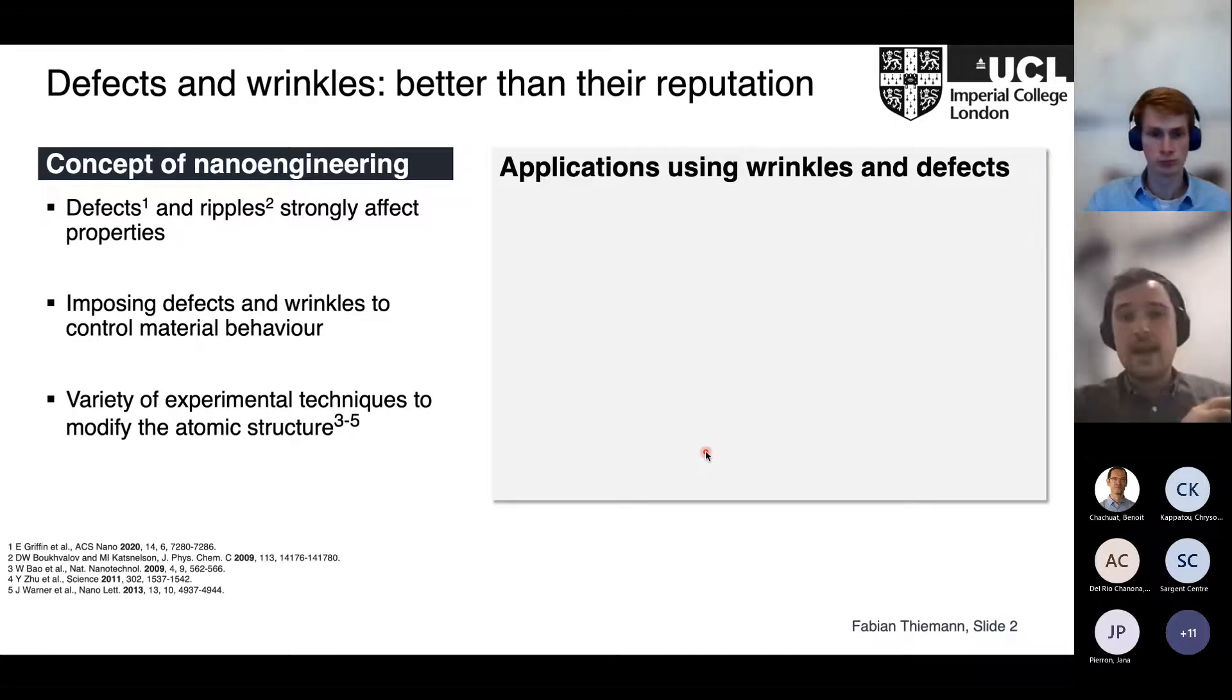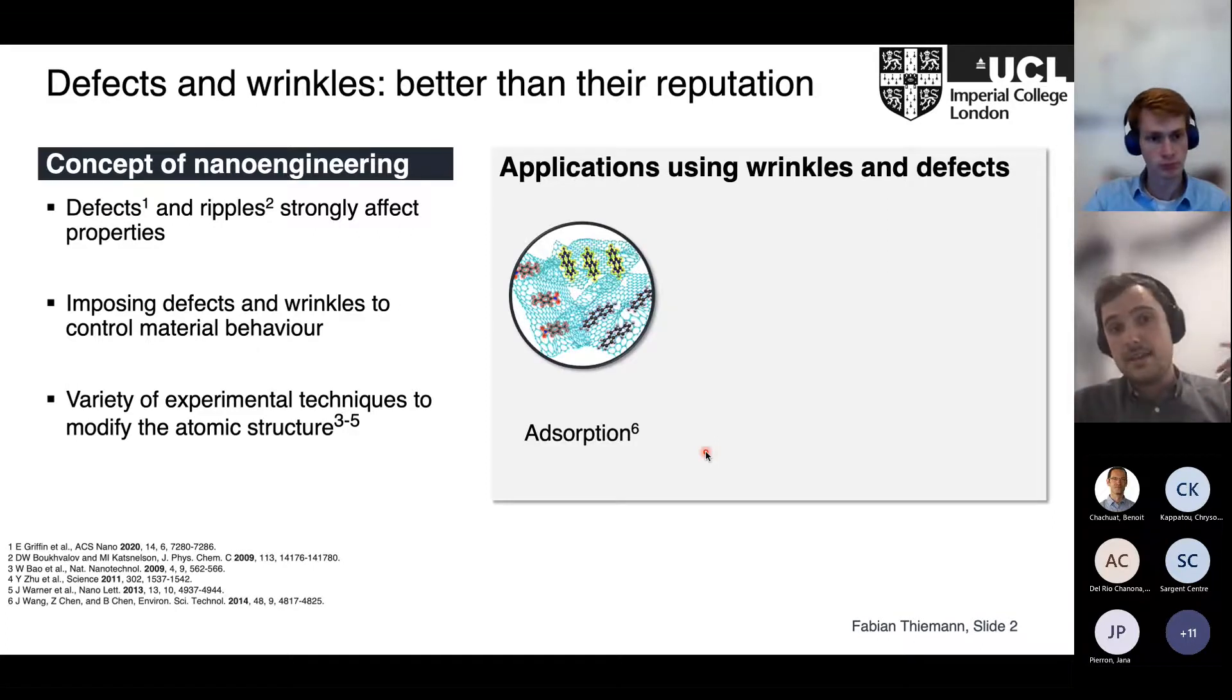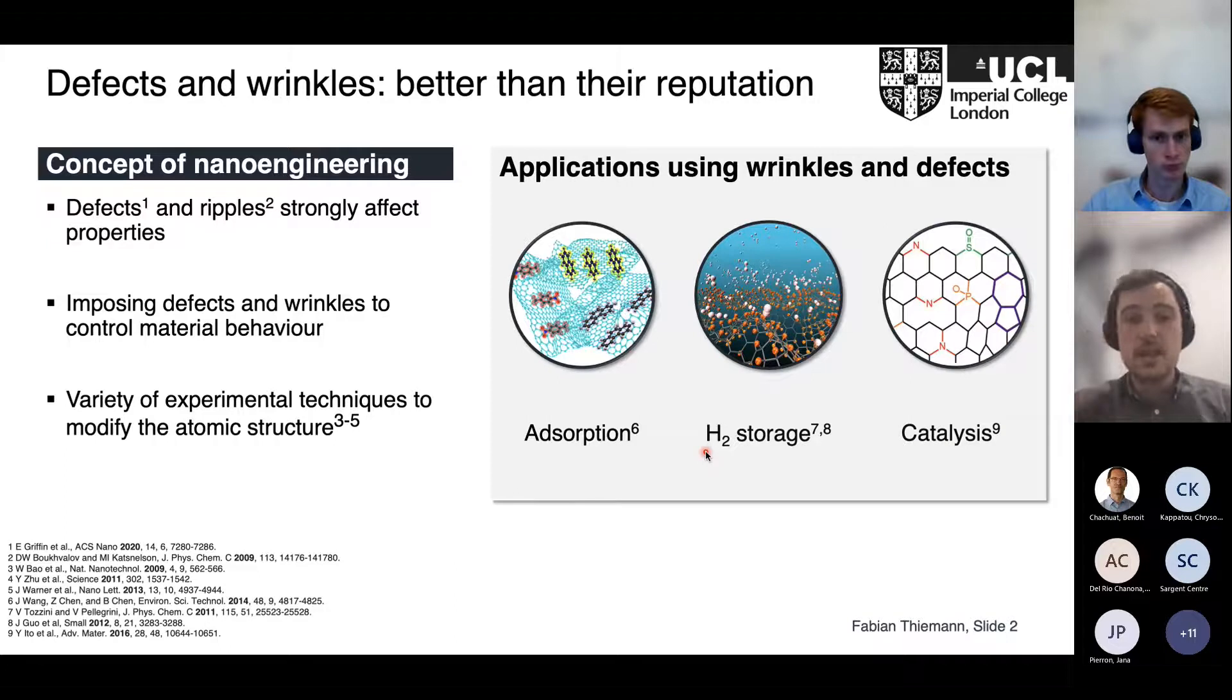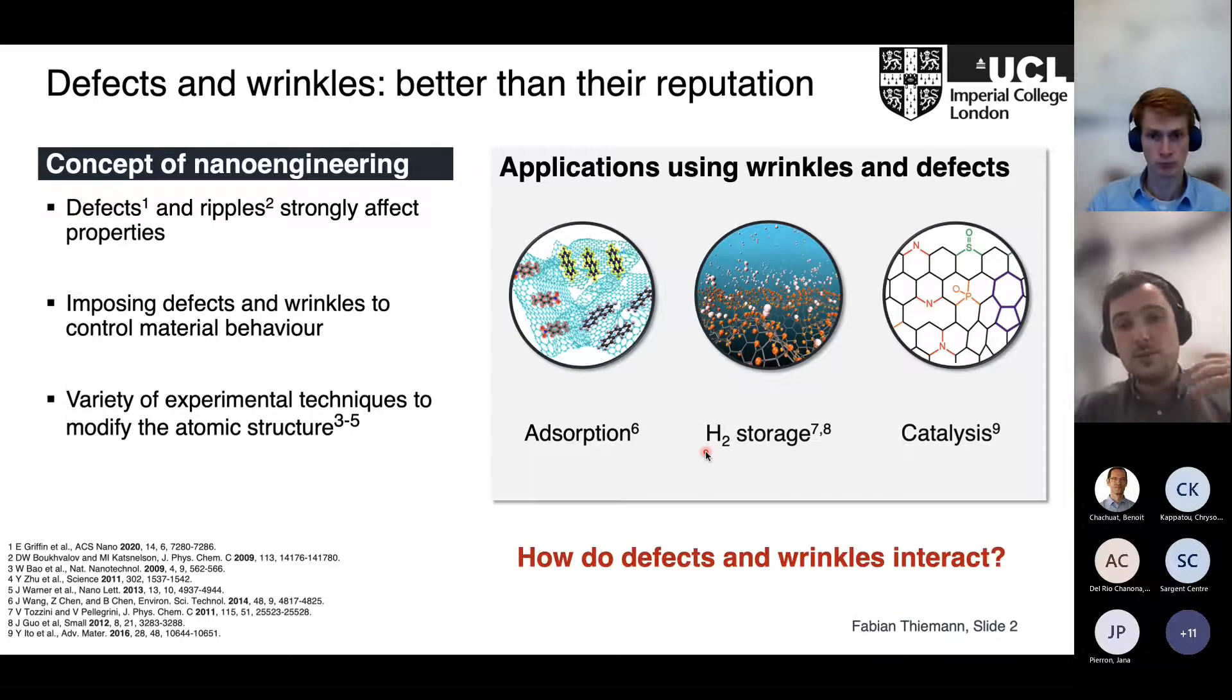There are a lot of applications where you can really make use of these wrinkles and defects. For example, they change and enhance the chemical activity of the substrate, and therefore they are good candidates for absorption of organic pollutants, hydrogen storage, or catalysis, just to name a few.